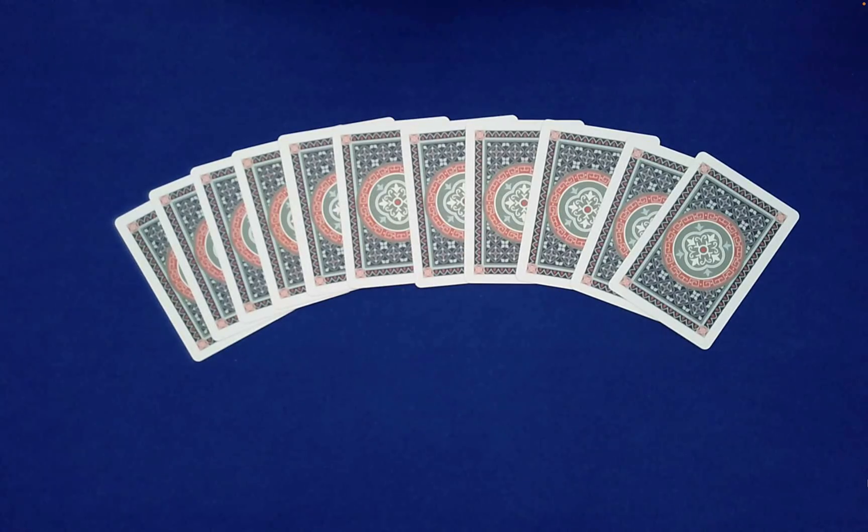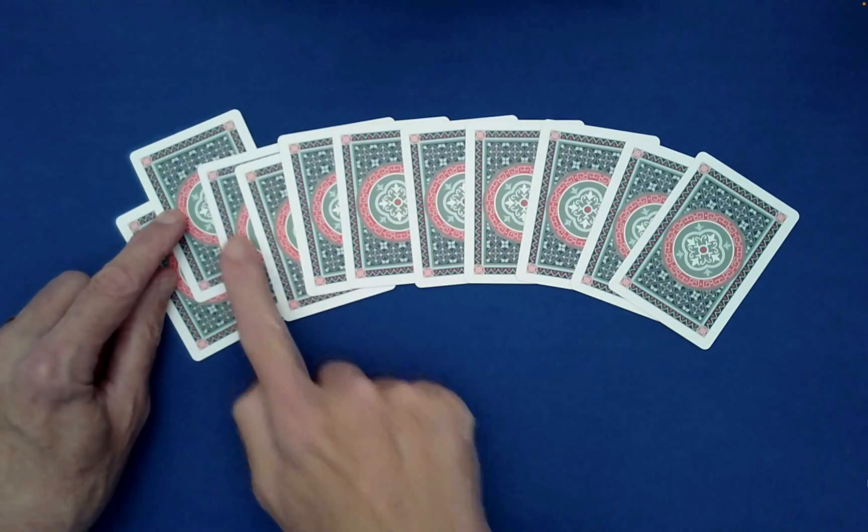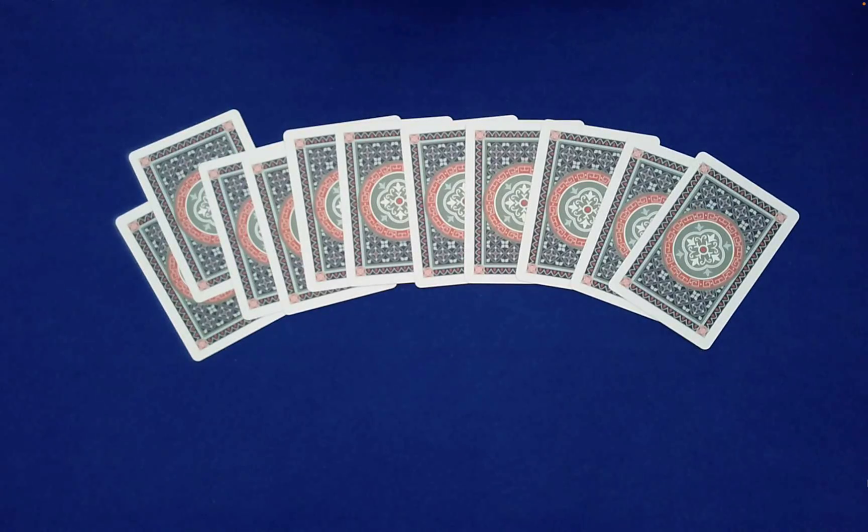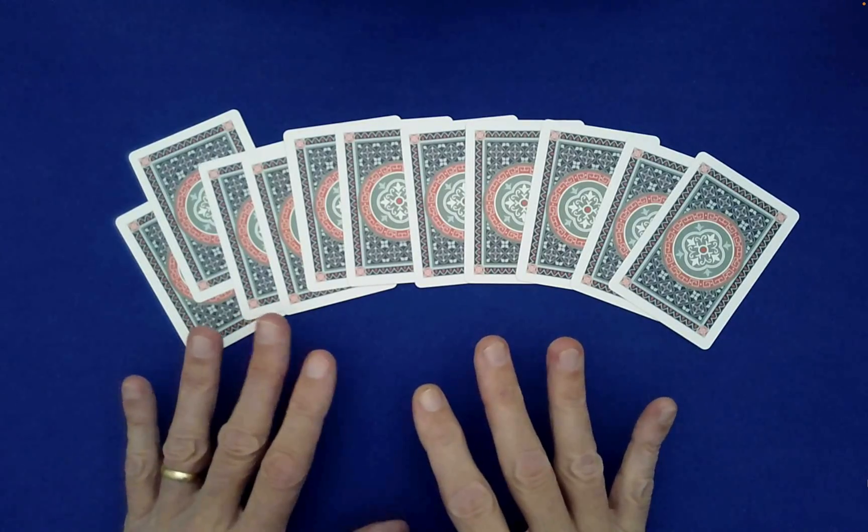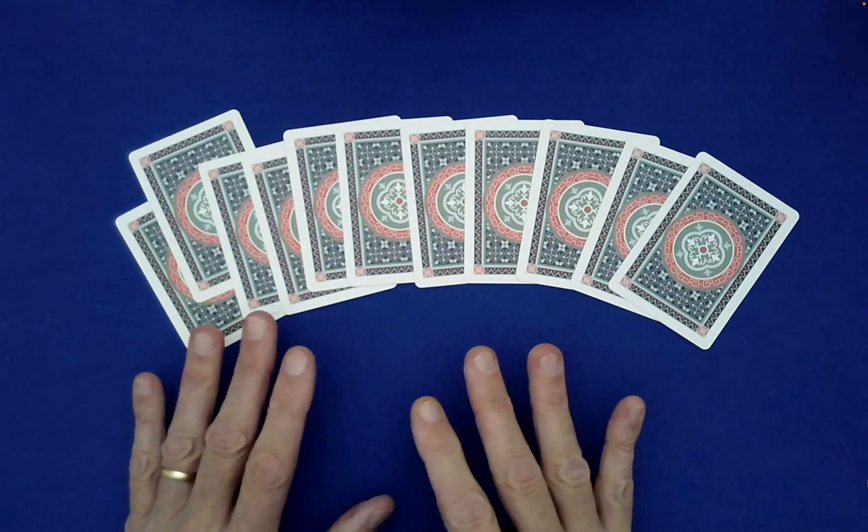The spectator's freely chosen card from the beginning is guaranteed to be in the second position from the bottom. As I mentioned, this is based on off-centered coding, so you can plan on that being the case regardless of how many cards were chosen, as long as it's somewhere between 8 and 13.